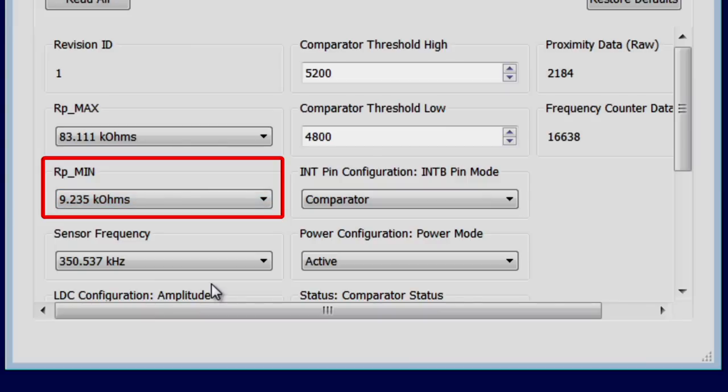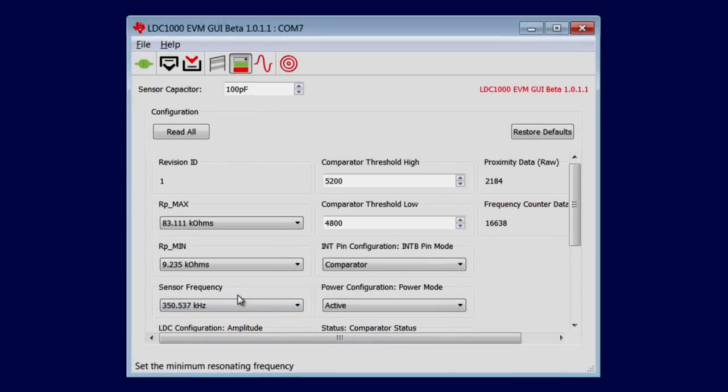Once that's selected, make sure that the sensor frequency is set at least 20% lower than the minimum frequency that was measured on the impedance analyzer. The setting here is 350 kilohertz, which is okay for this particular coil.